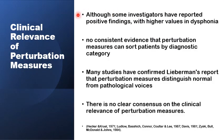Is there any clinical relevance for perturbation measures including shimmer? Although some investigators have reported positive findings with higher shimmer in patients with dysphonia compared to those with normal voices, there is no consistent, valid, and reliable evidence that shimmer and other perturbation measures can reliably lead to diagnostic criteria categories like normal or pathological. There is no clear consensus among laryngologists on the clinical relevance of perturbation measures.